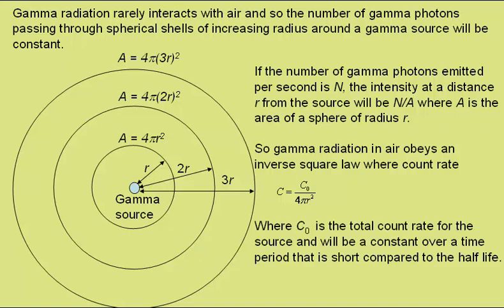C₀ is the total count rate for the source. This will be constant over a time period that is short compared to the half-life of the source.